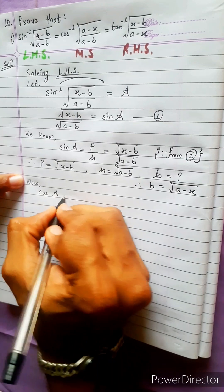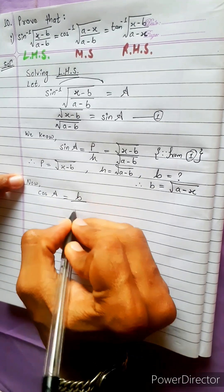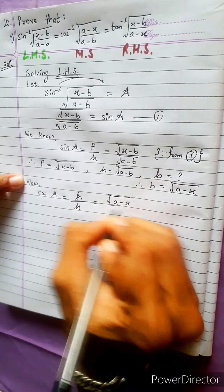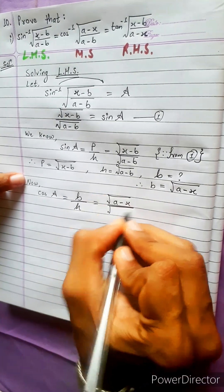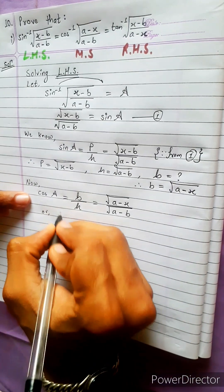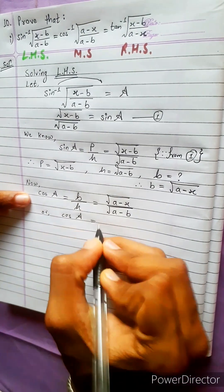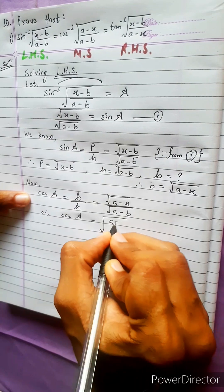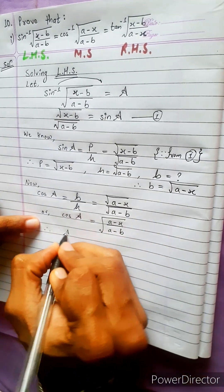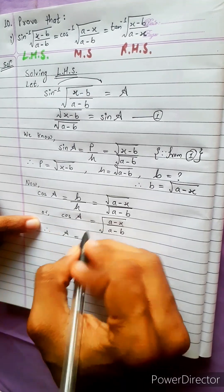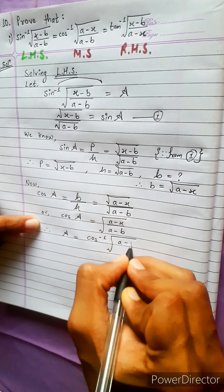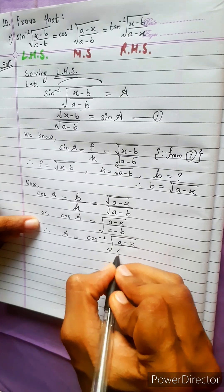Now cos A equals base divided by hypotenuse, which equals square root (a minus x) divided by square root (a minus b). Therefore A equals cos inverse of square root (a minus x) divided by square root (a minus b). This is equation 2.